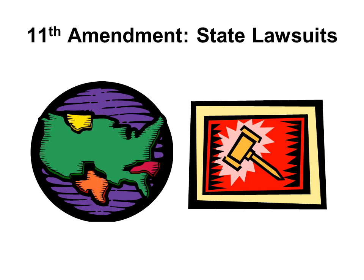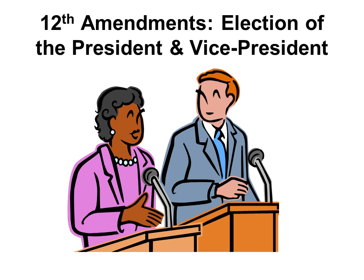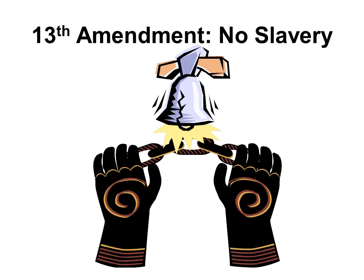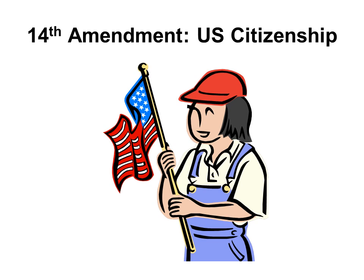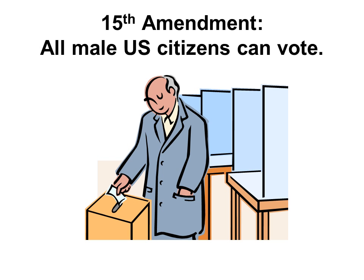The eleventh amendment talks about how states cannot sue each other. The twelfth amendment talks about the election of the president and vice president. The thirteenth amendment prohibits slavery. The fourteenth amendment talks about how a person can become a U.S. citizen and their rights and responsibilities. The fifteenth amendment guarantees that all male U.S. citizens can vote.